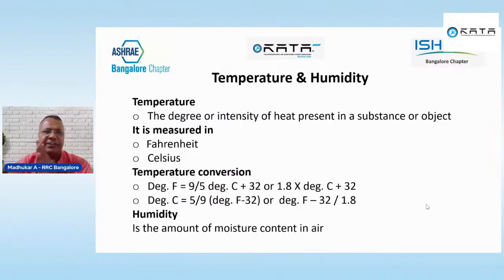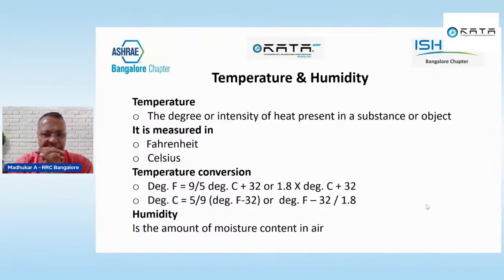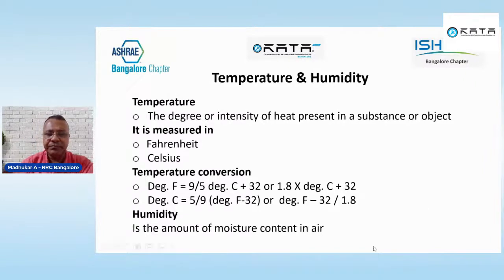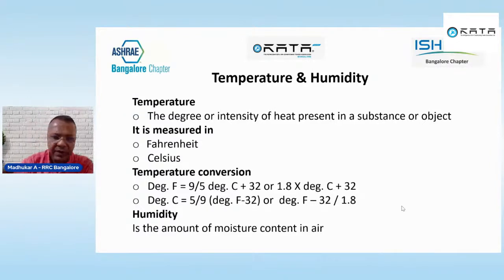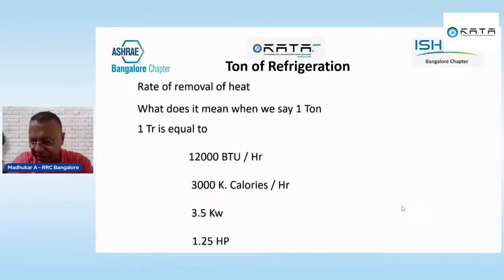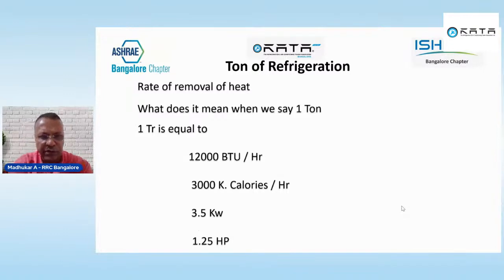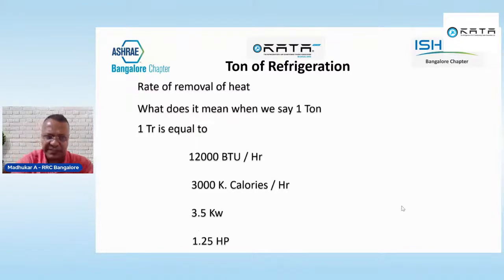Temperature is the degree or intensity of heat present in a substance or object, generally measured in Fahrenheit or Celsius. The conversion formula is: °F = 1.8 × °C + 32, and °C = (°F − 32) ÷ 1.8. Humidity is the amount of moisture content in air. When we talk about ton of refrigeration — the capacity of an AC — it is the rate of removal of heat from an enclosed space.